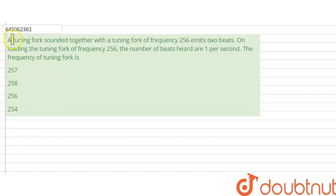Hello, we are given with a question and the question says: a tuning fork sounded together with a tuning fork of frequency 256 emits two beats per second. On loading the tuning fork of frequency 256, the number of beats heard are one per second. The frequency of the tuning fork is what?